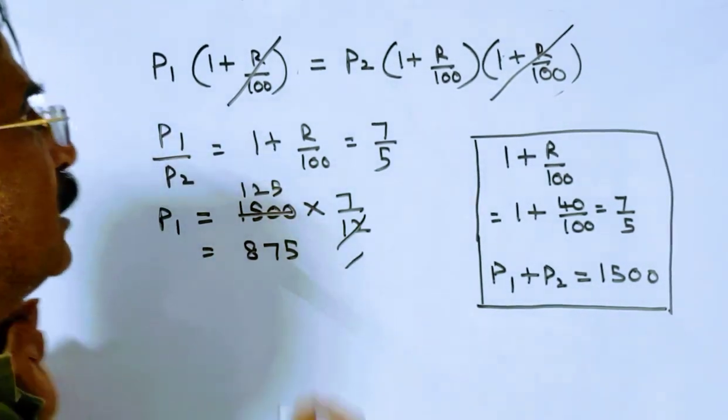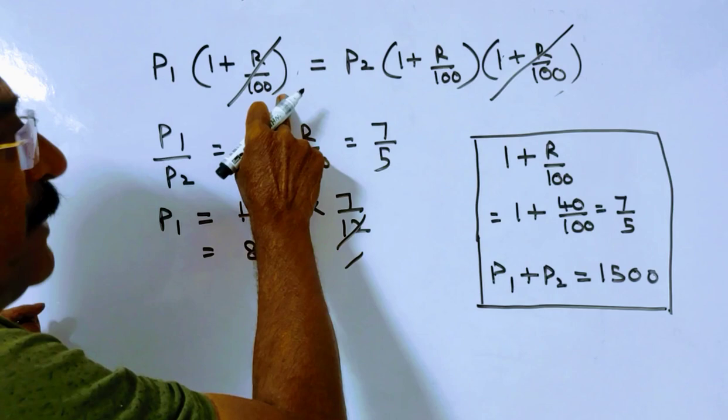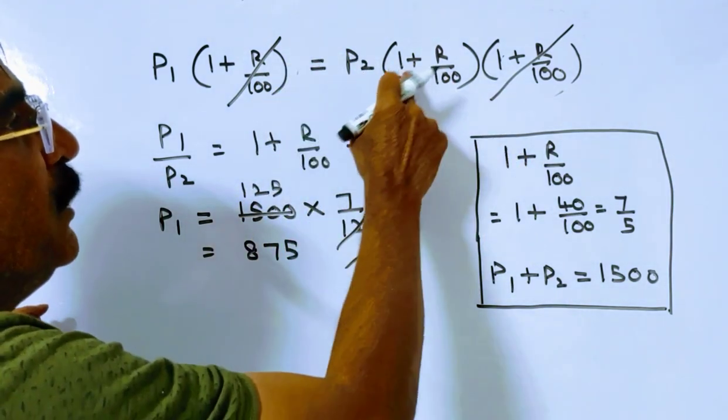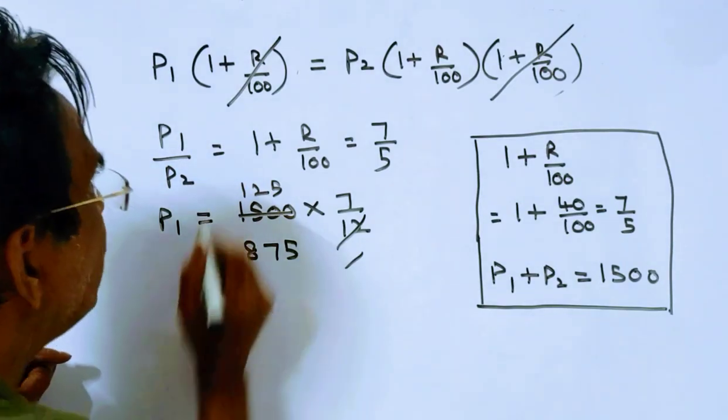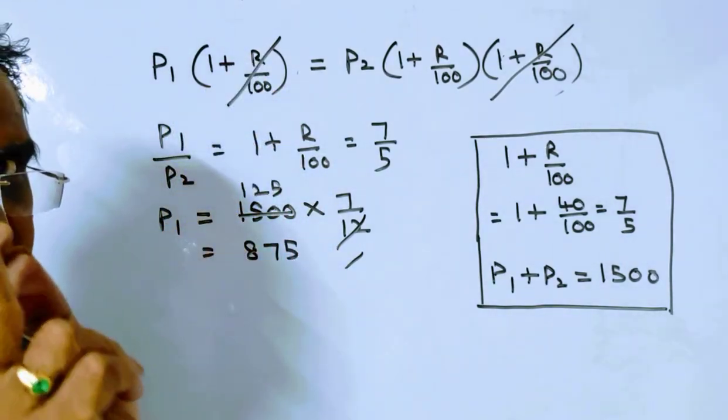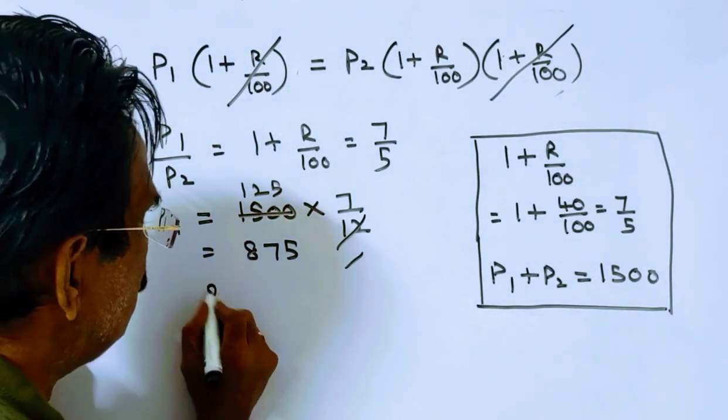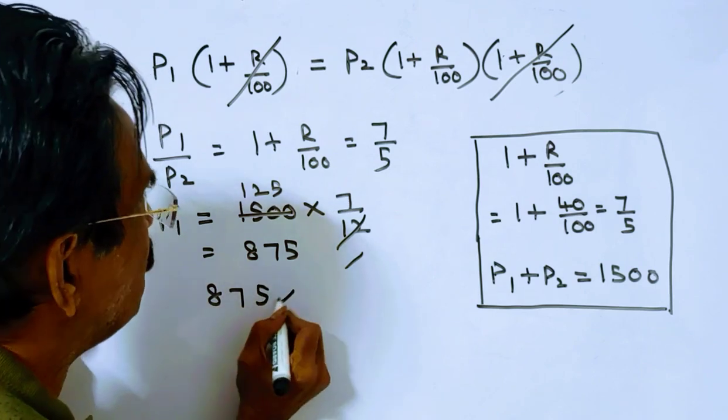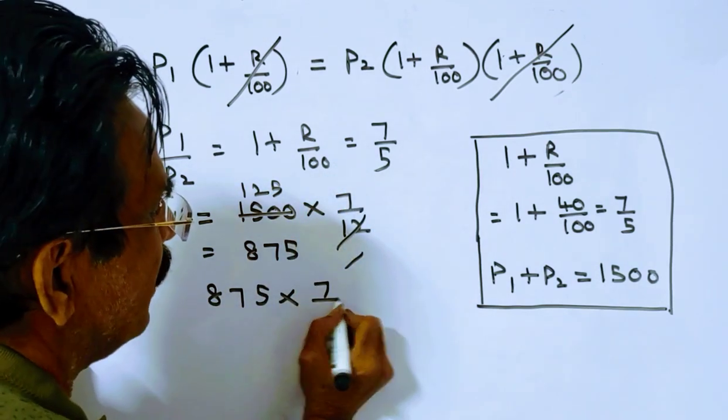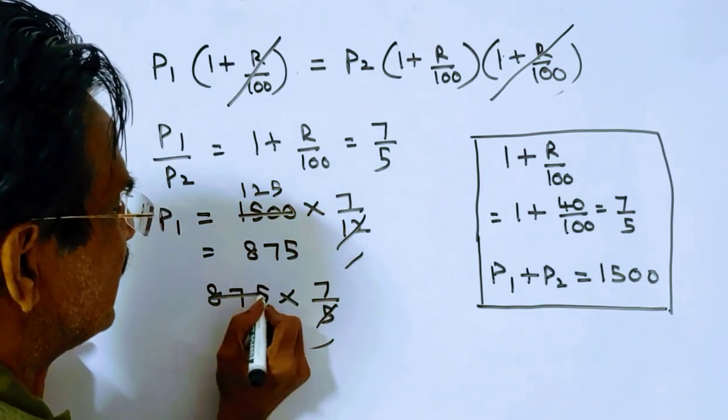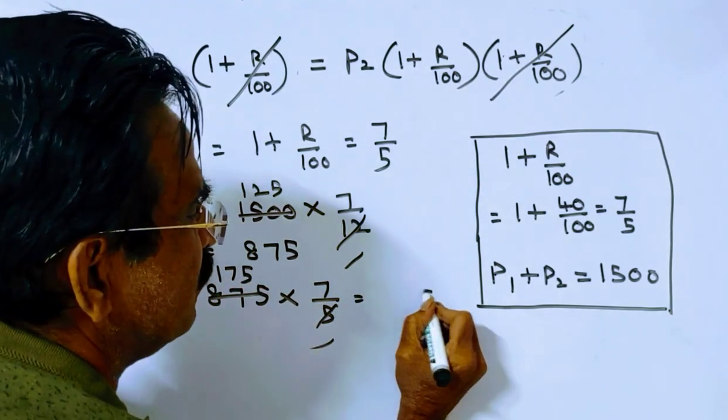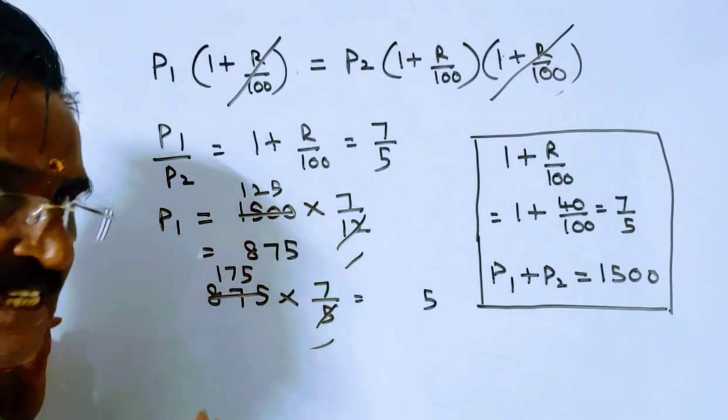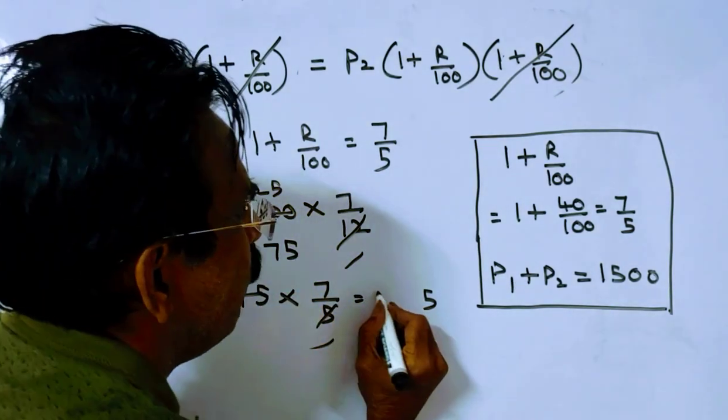Friends, now the installment value, either P1 into 1 plus R by hundred or P2 into 1 plus R by hundred squared. So now let us take this one. P1 into 1 plus R by hundred is the installment value. So P1 into 1 plus R by hundred. 5, 17, 85, 5, 5, 7, 5, 35, 7, 70 is 119 plus 3, 122.